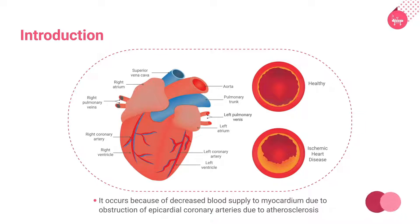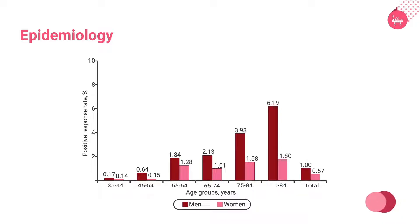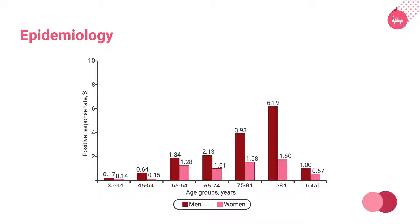We will now look at the epidemiology of ischemic heart disease. IHD is still considered to be a significant cause of mortality and morbidity in developed nations. Although mortality due to IHD has declined worldwide over the last few years because of advancements in treatment and improved healthcare facilities, it is still responsible for more than one-third of all deaths of individuals over 35 years of age.